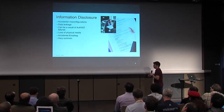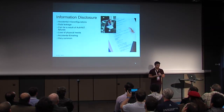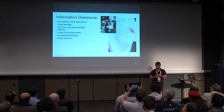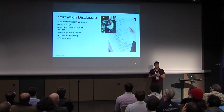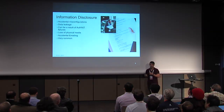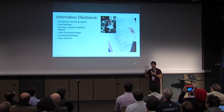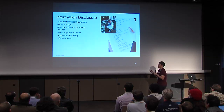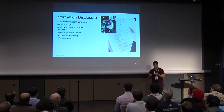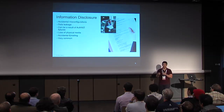Information disclosure: the system is caused to disclose information it shouldn't otherwise do, in any number of ways. This can be as simple as misconfigured Horizon interfaces where you've left configuration panels open, through to Heartbleed — which we'll talk about in a minute — which is actually an information disclosure vulnerability. It's just a really, really horrible one.